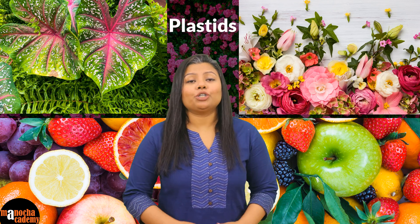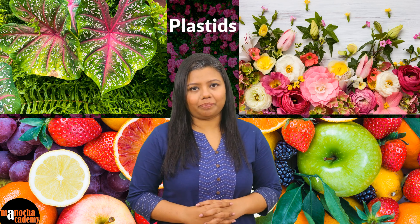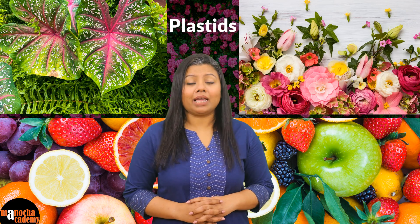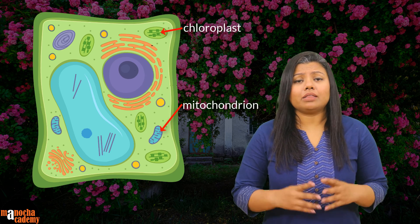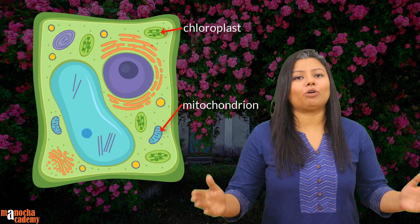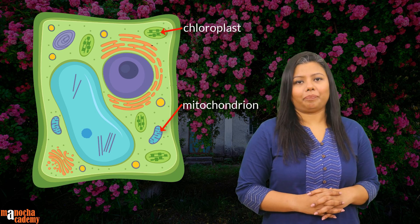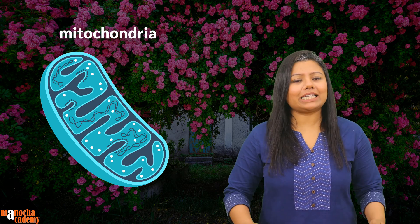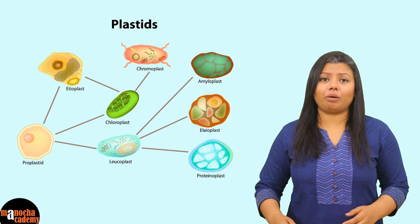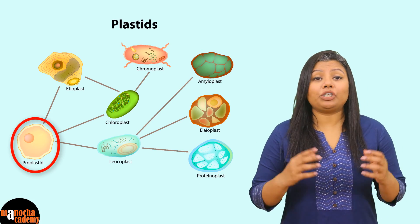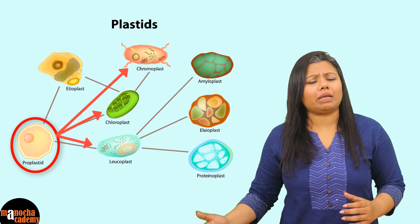Plastids that impart color to different parts of the plants. Welcome to Manocha Academy and today we are going to discuss about chloroplasts, chromoplasts and leukoplasts. The term plastid was introduced by Ernst Haeckel in 1866. This is another semi-autonomous cell organelle. We have already learned about mitochondria which is semi-autonomous because it has its own DNA and protein synthesizing machinery. Plastids are formed from proplastids which are the origin of all three types of plastids.